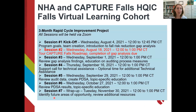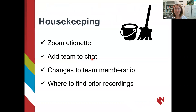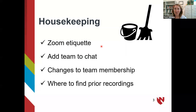So here we are at session two of this three-month rapid cycle improvement project. I think Dana already went over all the housekeeping items. Just a reminder to mute your lines unless you want to speak up — we welcome that if anybody wants to chime in and share anything. Dana, is there anything else you need to let the group know?